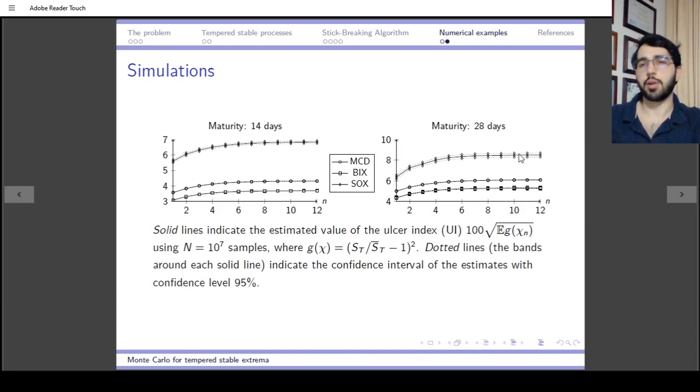Here the confidence interval is now visible but still very close to the real value. This required 10 million samples, and this was done for the ulcer index for McDonald's, VIX, and SOX for different maturities.